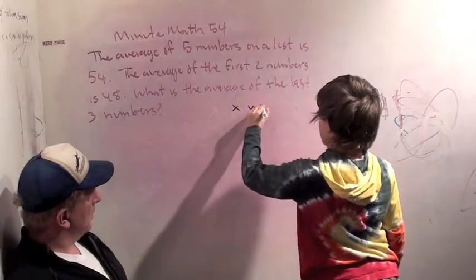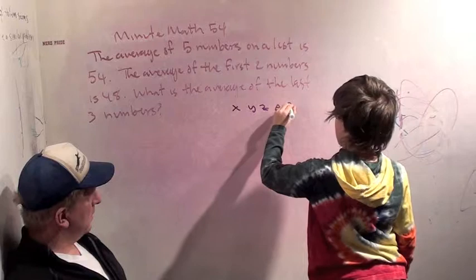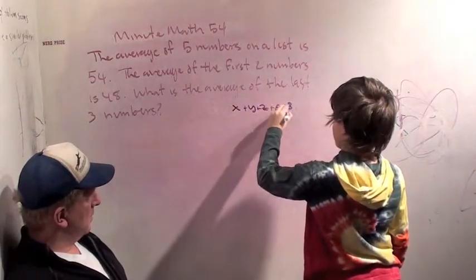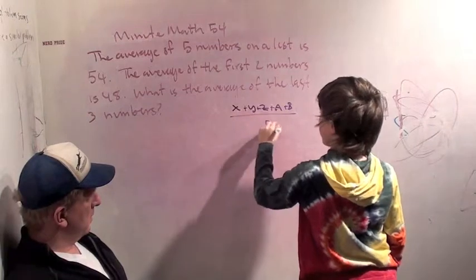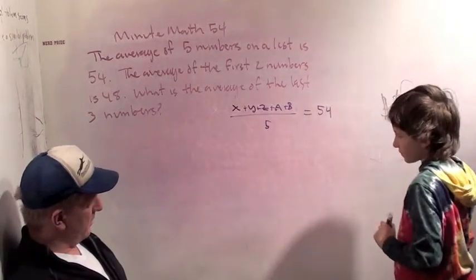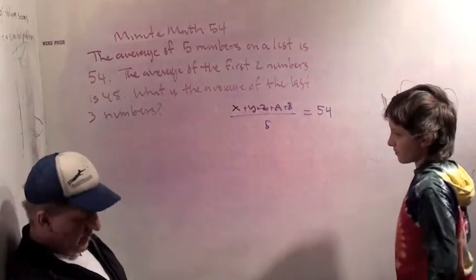All right, go ahead. So we have x, y, z, a, and b for our five numbers. x plus y plus z plus a plus b over 5 equals 54. That's what average means.